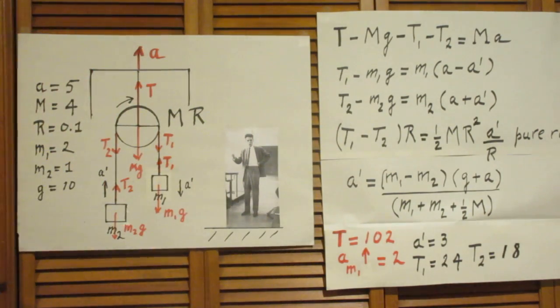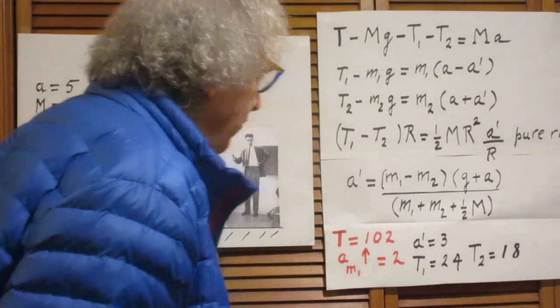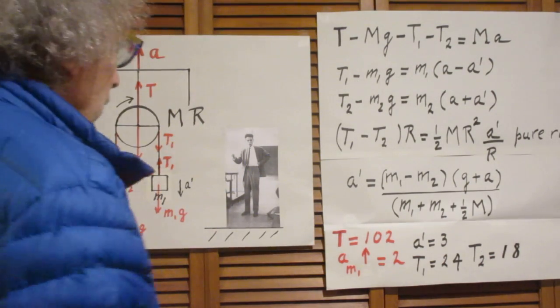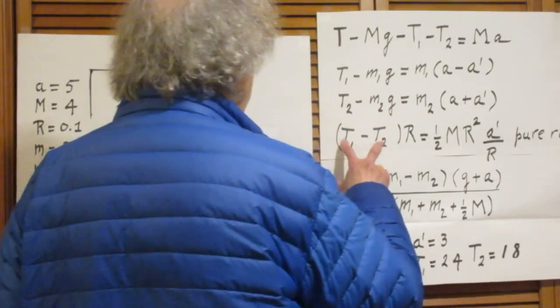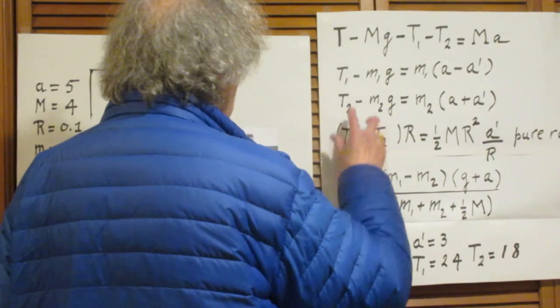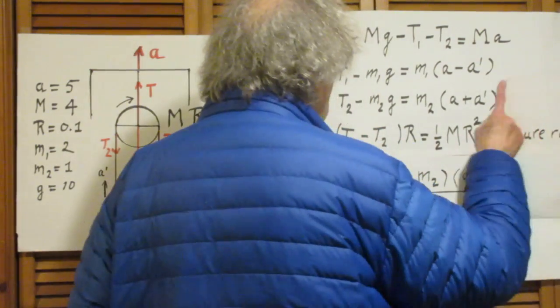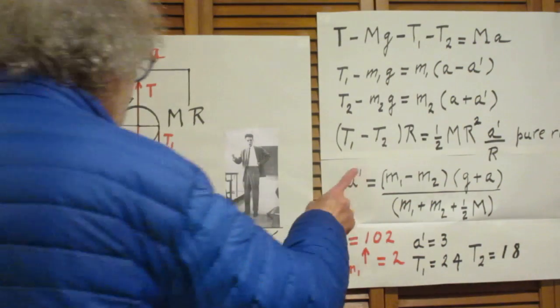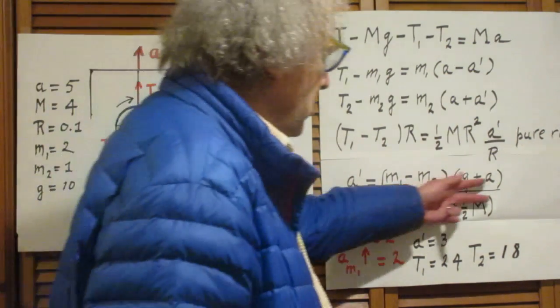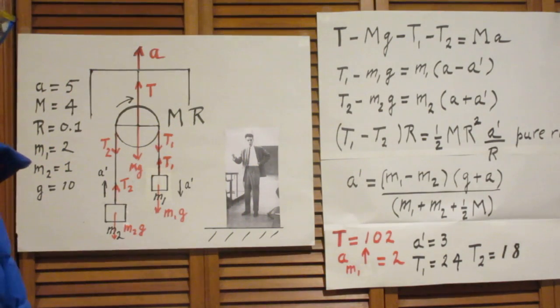In other words, alpha is a prime divided by R because there is pure roll condition. Four equations with four unknowns: T, T1, T2, and a prime. I think the fastest way to solve this is to start with this equation and replace T1 minus T2 by the difference between these two equations, which gives you one equation only with a and a prime. So you immediately find a prime, and this is the result. There are two interesting things that you should check - we call that consistency checks.